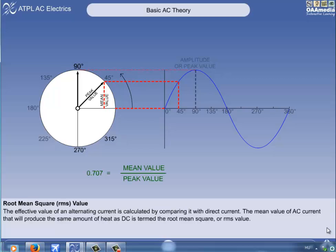The sine of 45 degrees is 0.707. So in our case, 0.707 equals the mean value divided by the peak value.